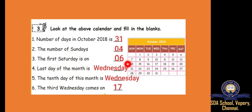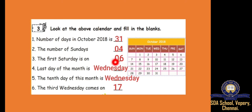7, 14, 21, 28 — these are all Sundays. How many are there? 4 are there, so 4. The first Saturday is on — where is the Saturday? First Saturday is on 6th. Last day of the month — 31 is the last day, and what is the day? Wednesday.